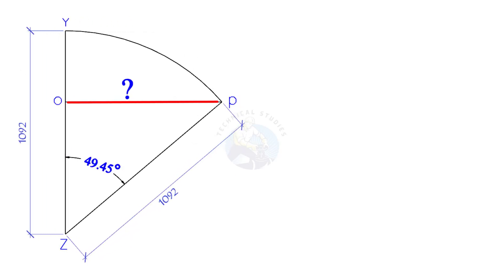Our goal is to find the half chord length OP. Let us apply the trigonometric sine rule to find the OP dimension.